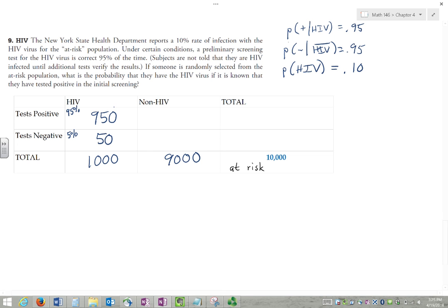For the non-HIV, it'll be reverse. 5% will test positive anyway, and 95% will test negative. So we want 95% of 9,000. That's 8550. It's 95% of the 9,000, and the other 5%, 450, and that will add up to 9,000.